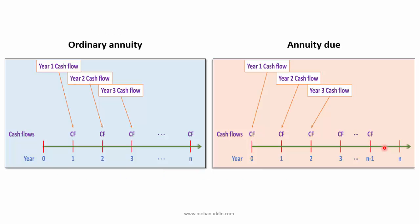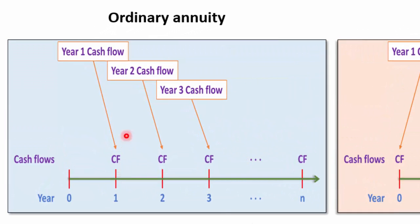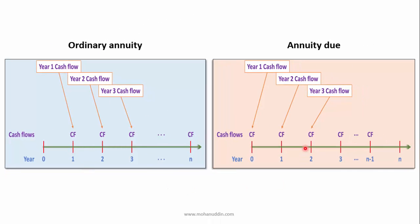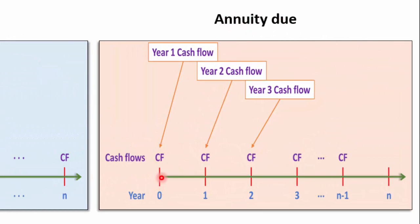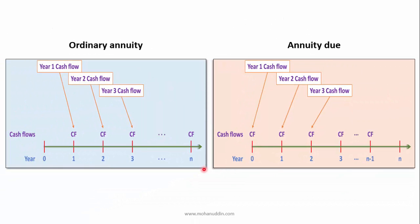If we look at these two types of annuities side by side we can see the difference very clearly. The first cash flow of ordinary annuity is generated at the end of year 1, shown at point 1. In contrast, the first cash flow of an annuity due is generated at point 0, which is the beginning of year 1. The last cash flow of ordinary annuity is at point n, while for annuity due the last cash flow is at point n minus 1 — which is still the year n cash flow, generated at the beginning of year n.